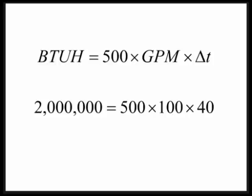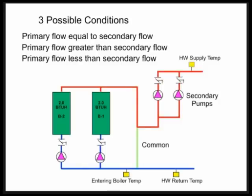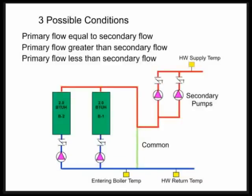In primary-secondary piping, there are three possible conditions: flow is equal in primary and secondary, primary flow greater than secondary, or primary flow less than secondary. Everything in perfect balance rarely happens — the heat will balance, but the flow rates won't. That's why primary-secondary works so well, though it changes efficiencies. When primary flow equals secondary flow: 100 GPM in the primary supplies 140-degree water, 100 GPM in the secondary goes out to the building, no flow in the common pipe, and the entering boiler temperature is 100 degrees.